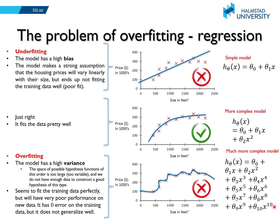If we want to fit such a complex model to this data, we need to collect more data. Originally we have just one feature x, the size of the house, but those additional polynomial terms can be seen as additional features — x squared, x cubed, and so on. When we have few data points compared to the number of features, overfitting can happen. So either we reduce the number of features to get a simpler model, or if we want such a complex model, we need to collect more training data.